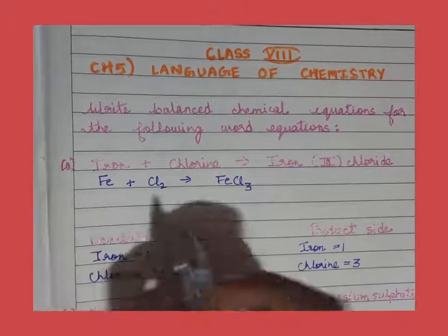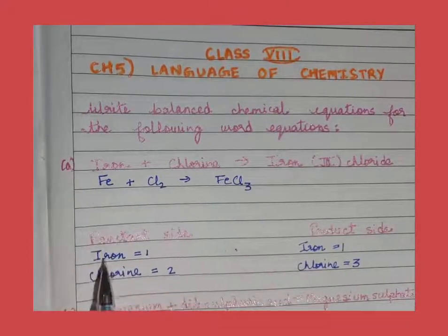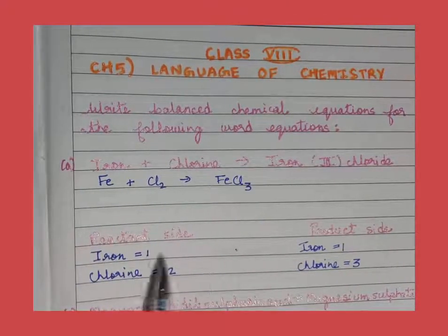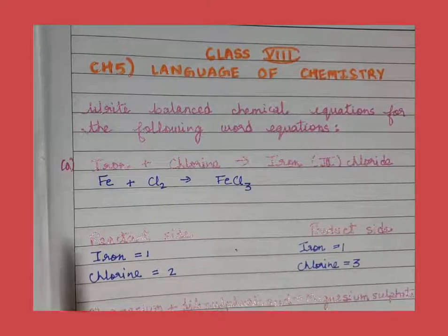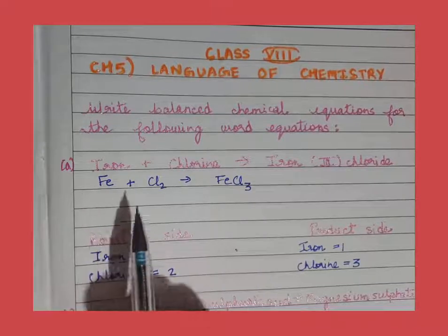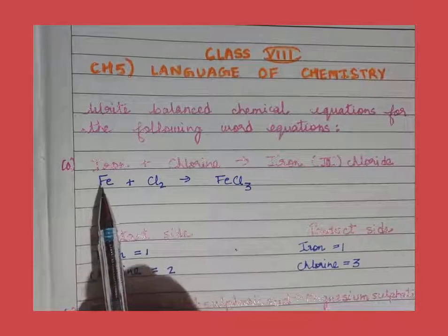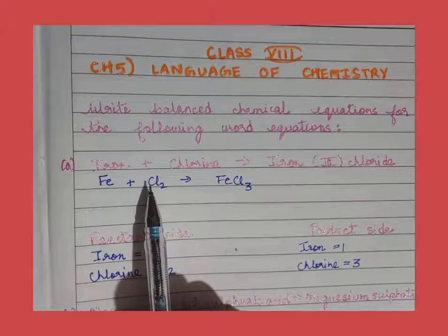Now you see on the reactant side iron is 1, and on the product side also 1. Always remember whenever you balance a chemical equation, you are going to start with metals, then non-metals, and then oxygen and hydrogen at the end.